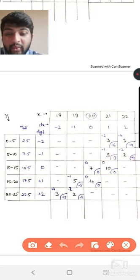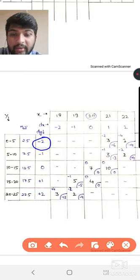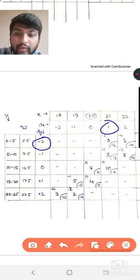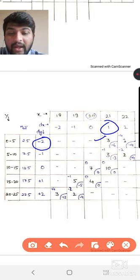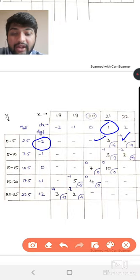Now you have to calculate dy dx. How much is it? Minus 2. And here the dx value is 1. You will calculate the frequency. So minus 2 into 1 is equal to how much? Minus 2.